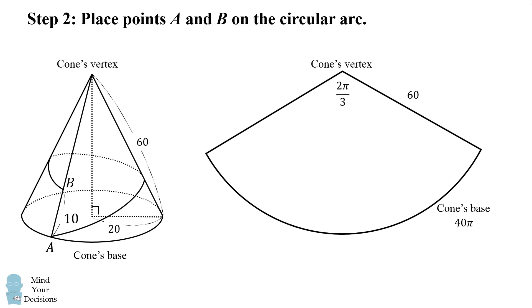Next we'll place points A and B on the circular arc. So what happens when we unwrap this cone into a circular arc? Well, point A is along the base, so we know it'll have to be somewhere along the base of this circular arc at the very edge.